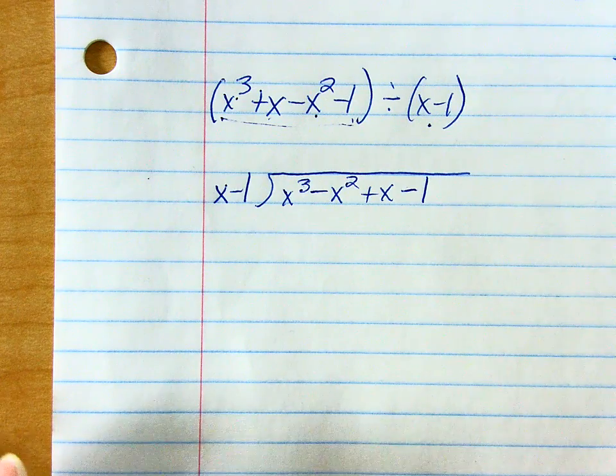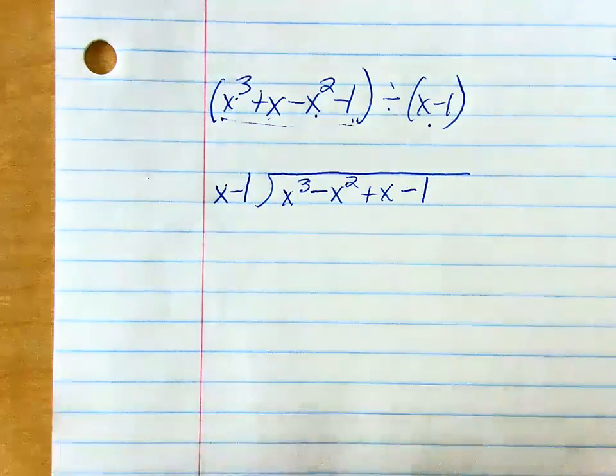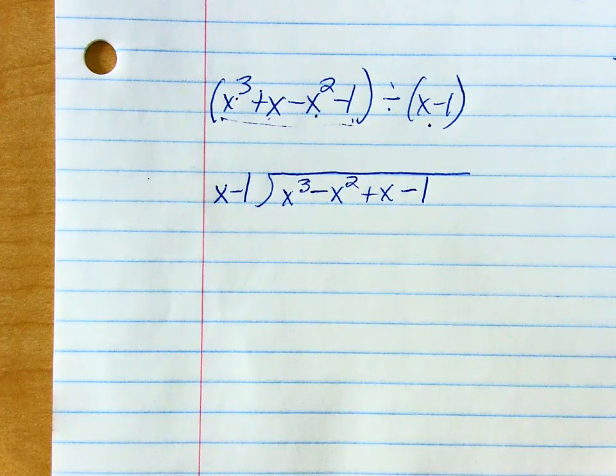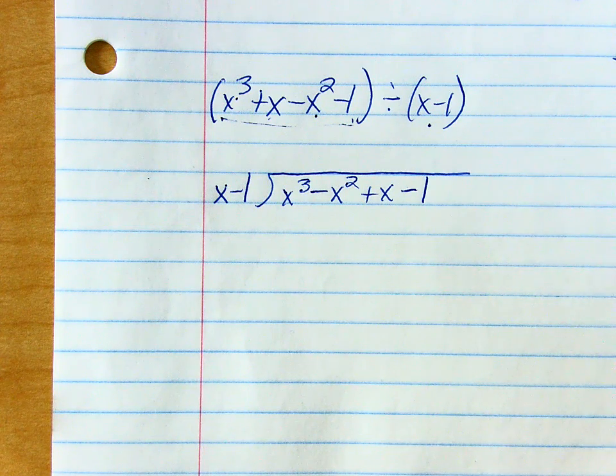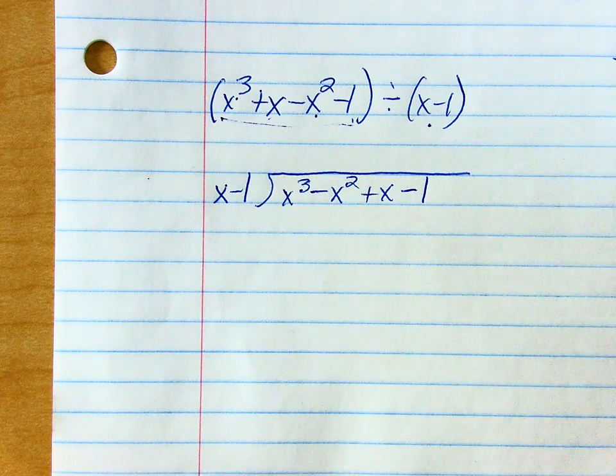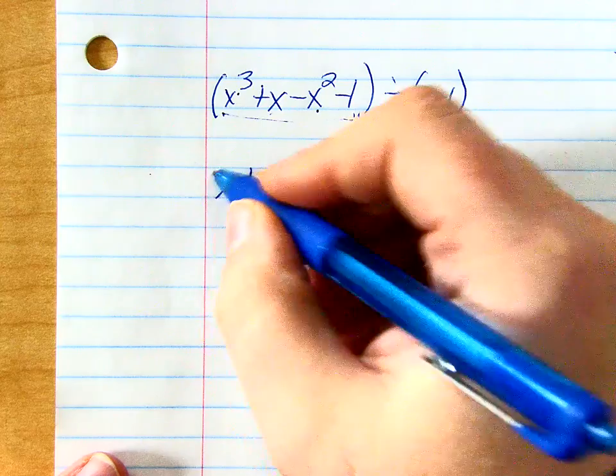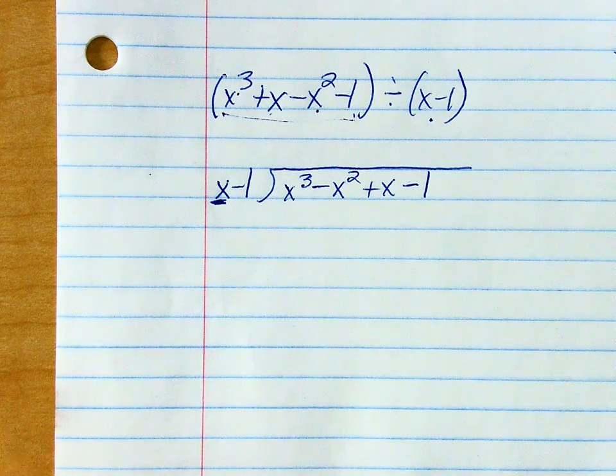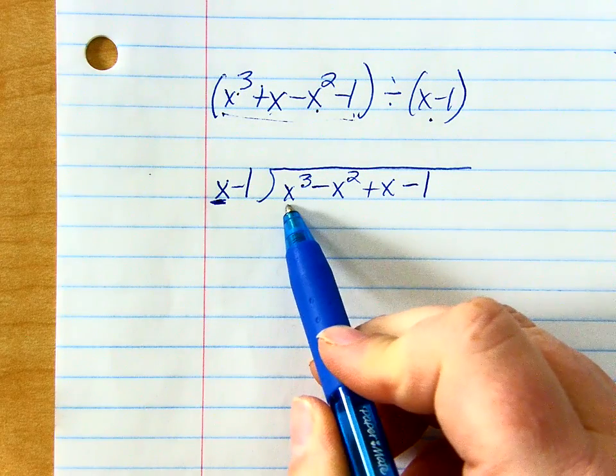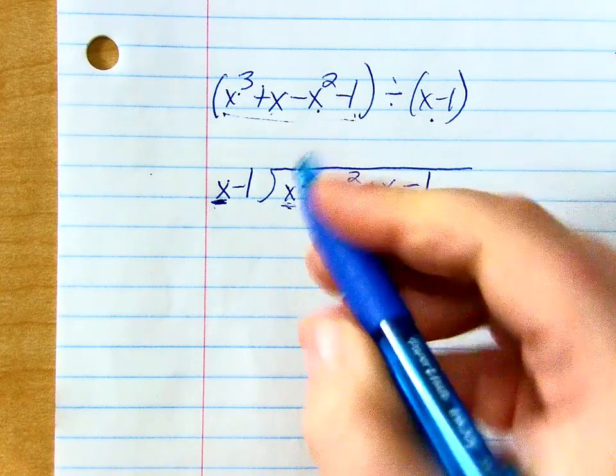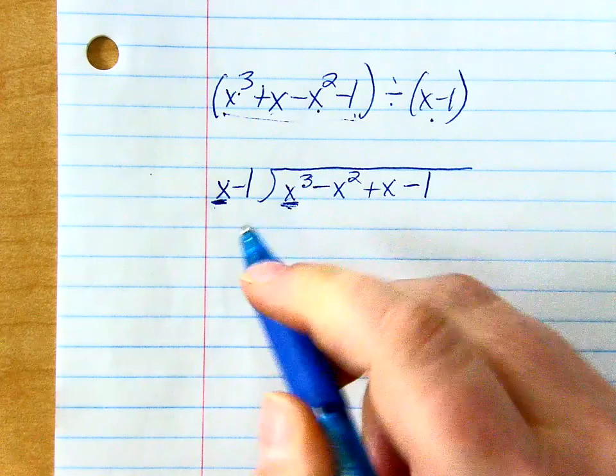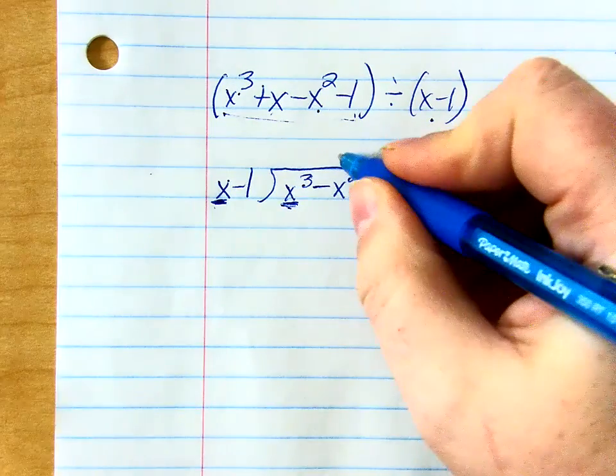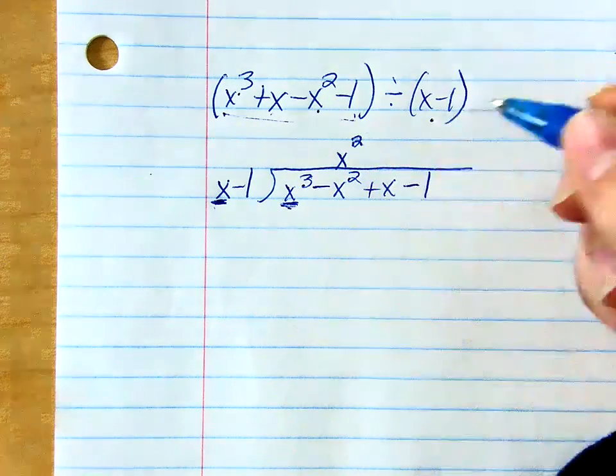I don't need any zero placeholders. I'm ready to begin. So remember, the first question you ask yourself is, you start always with this guy right here. What do I multiply x by to get x to the third? x squared.